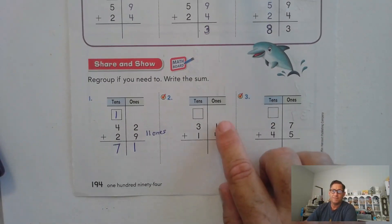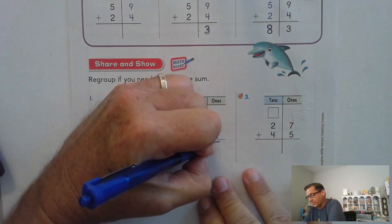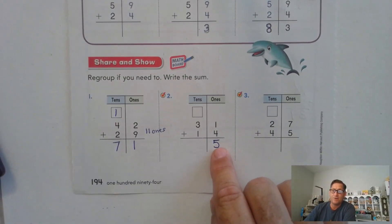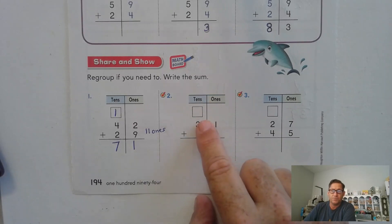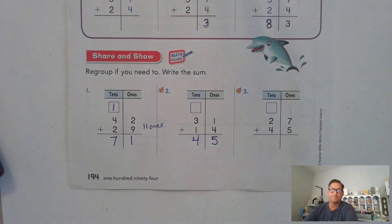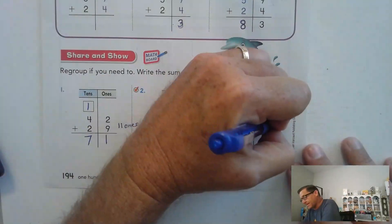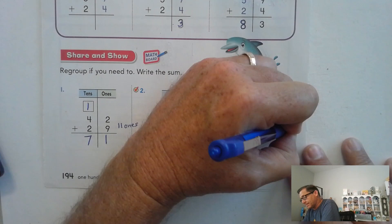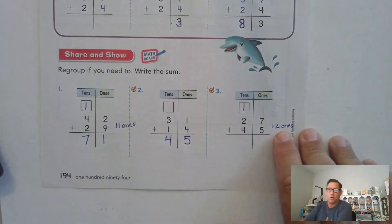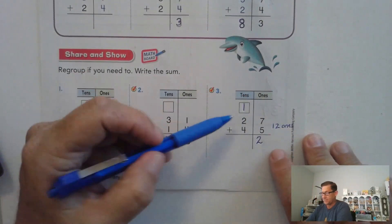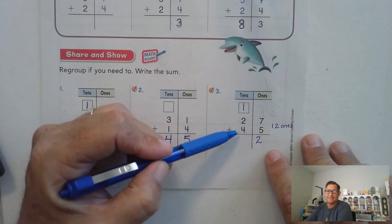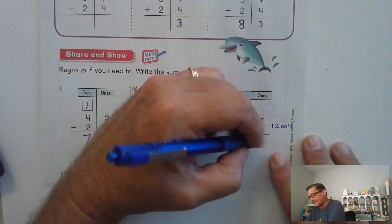Regroup if we need to. We have 4 ones plus 1 one — that's 5, right? We don't have to regroup. We only regroup if we have 10 or more ones, so there's nothing. 3 plus 1 is 4. Next: 7 and 5 — that's 12 ones, right? That's more than 10. So we're going to trade 10 of the 12 ones for a 10, leaving us 2 ones. We write 12 as 1 ten and 2 ones. Add up the tens: 4 and 2 is 6, plus the regrouped 10 — 7.